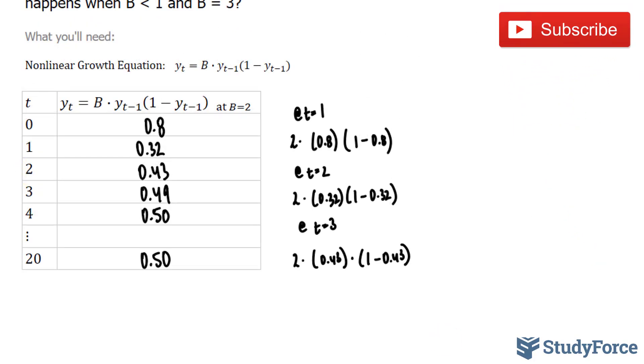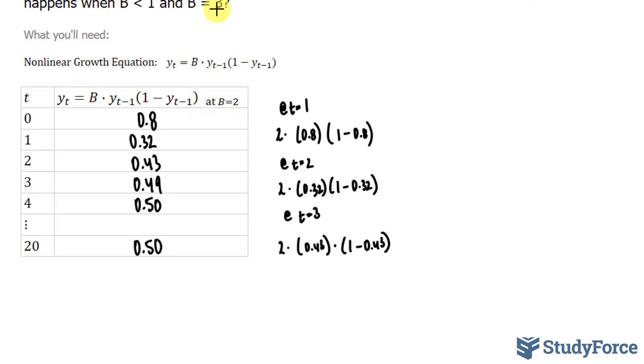To graph our findings, we can create an x and y chart that looks like this. This will represent our t, and this will represent our outputs, y subscript t. And this will be at 0, and we'll call this 1, 0.5, and 0.